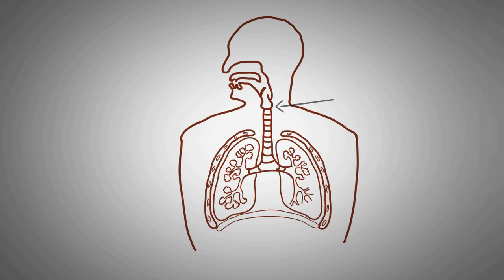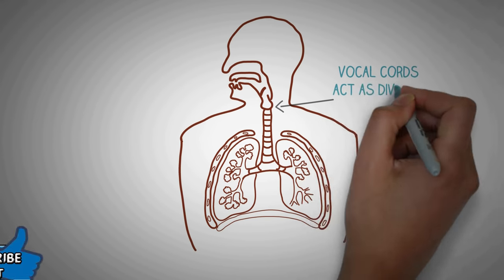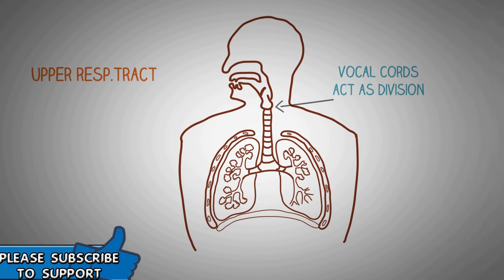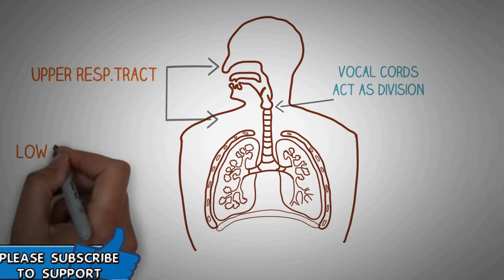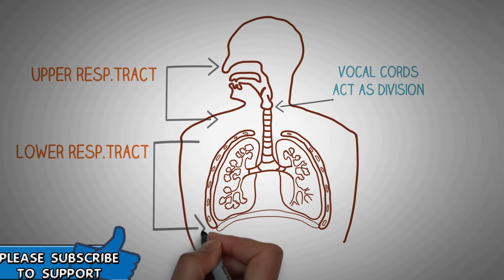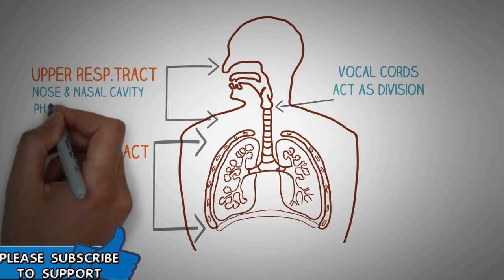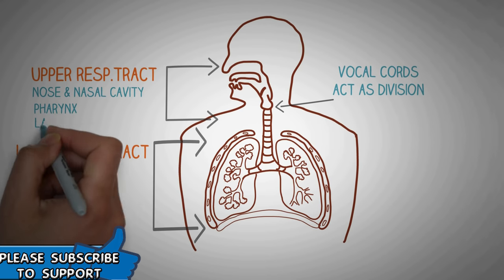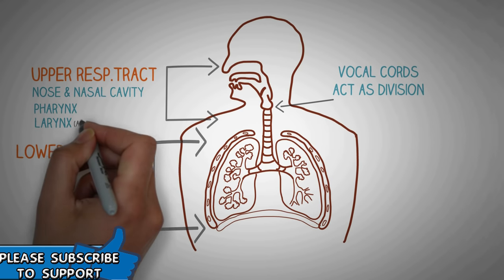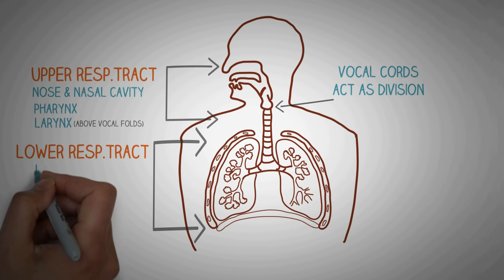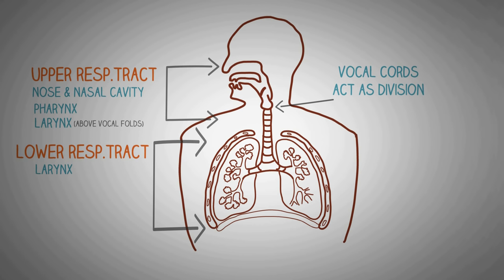Coming to the anatomy and physiology of the human respiratory system: the vocal cords present in the larynx divide the respiratory tract into the upper respiratory tract and the lower respiratory tract. The upper respiratory tract contains structures like the nasal cavity, the pharynx, and the part of the larynx above the vocal cords. The lower respiratory tract starts with the part of the larynx below the vocal folds, and includes the trachea, bronchi, bronchioles, as well as the alveoli.